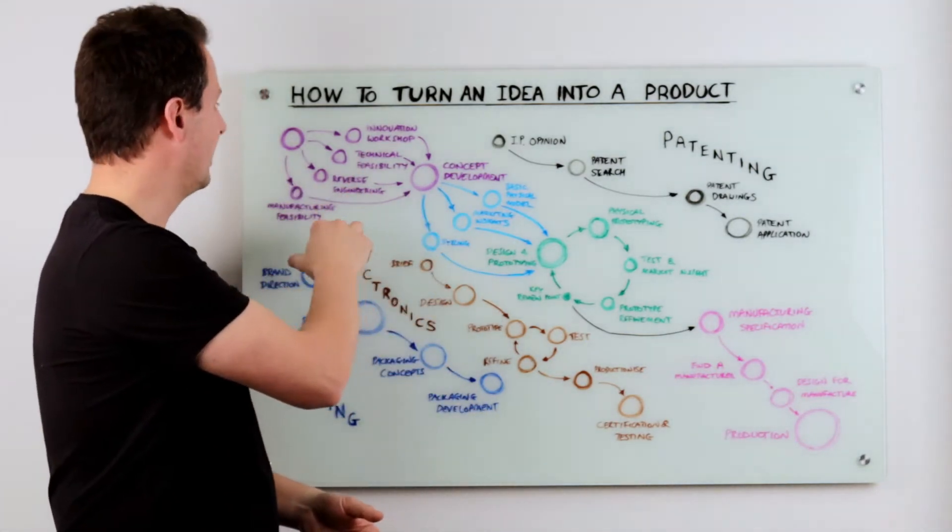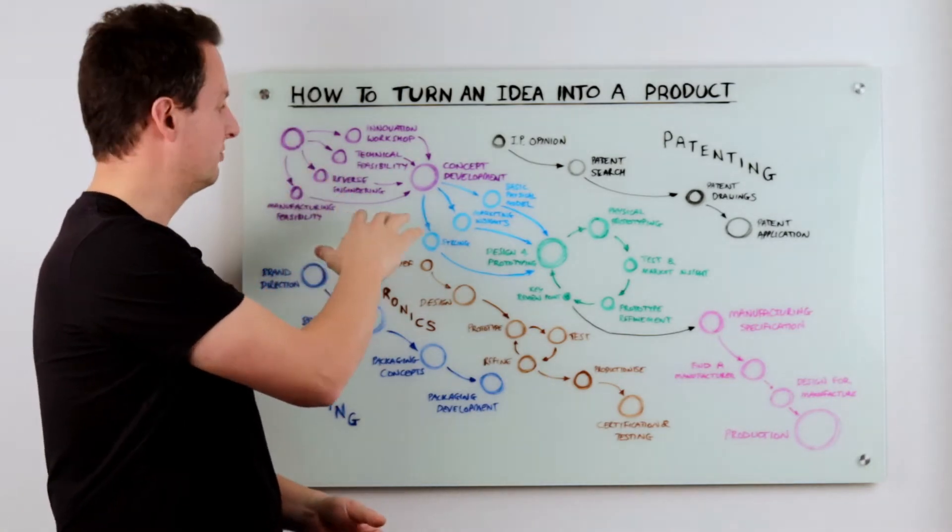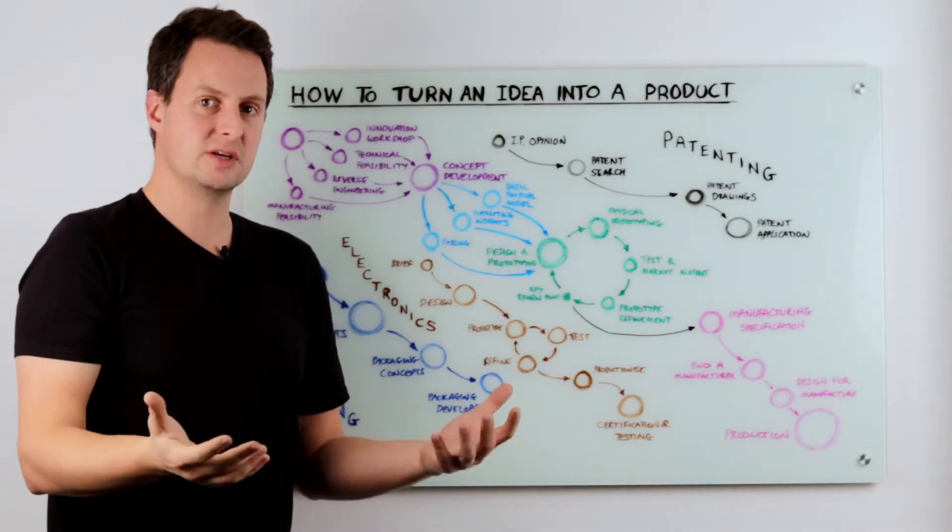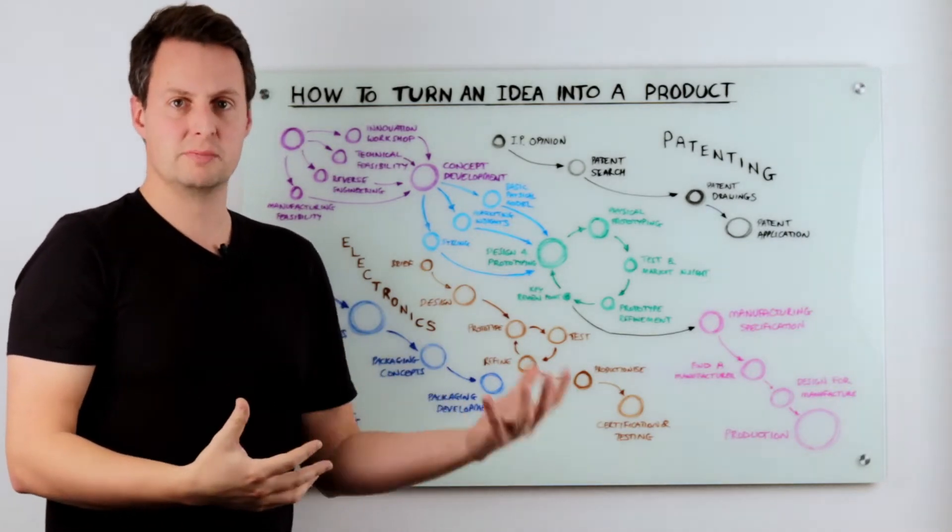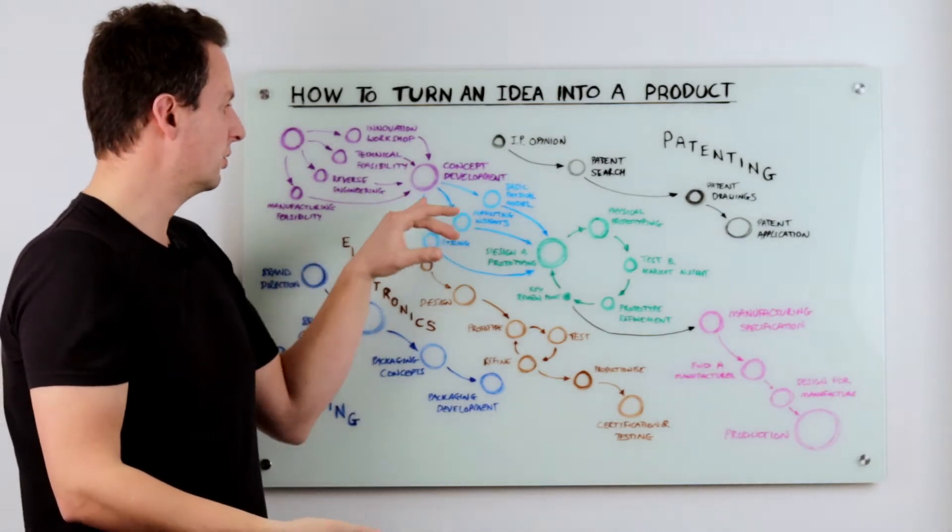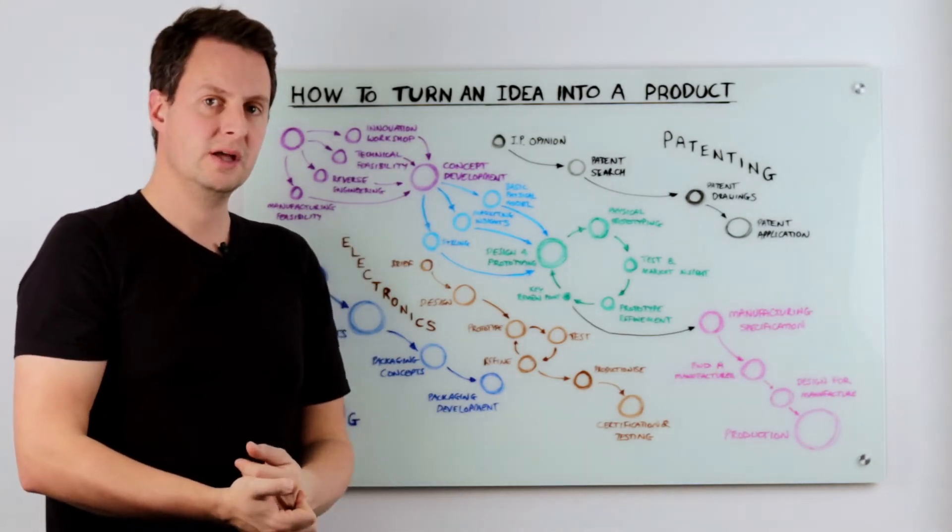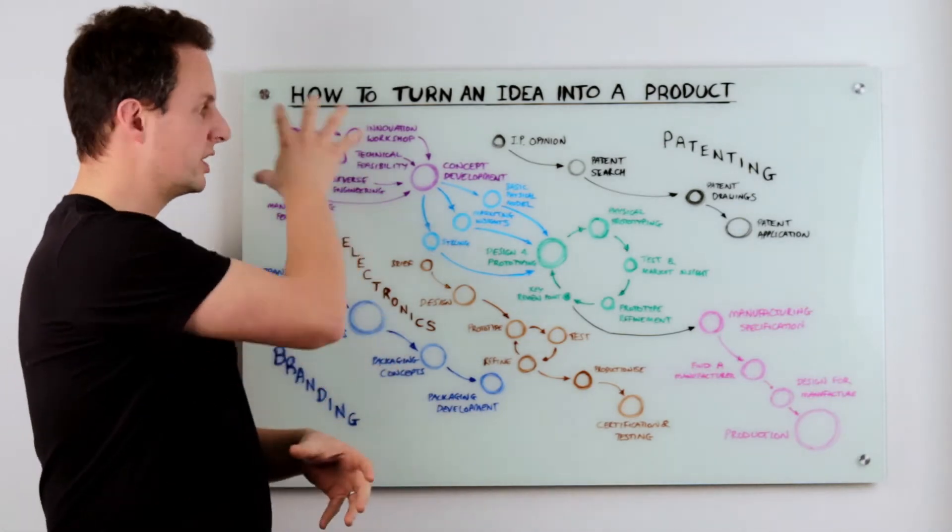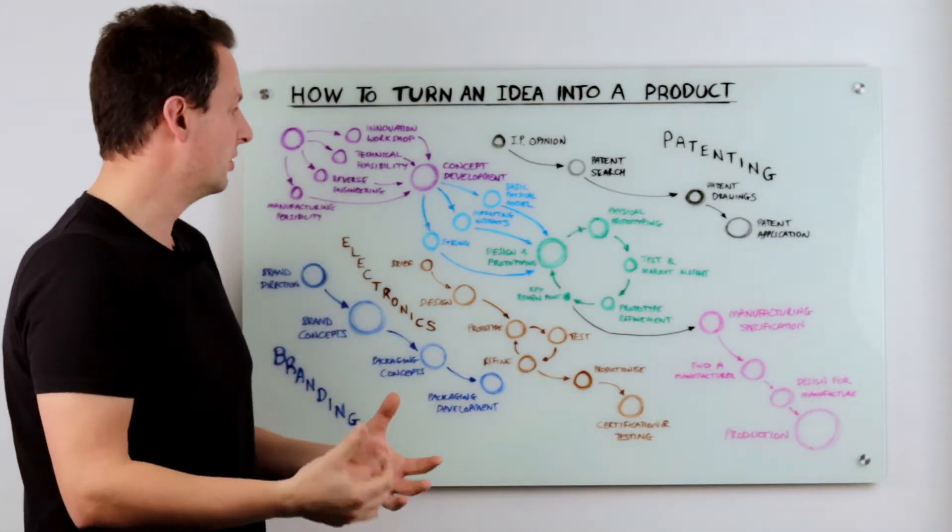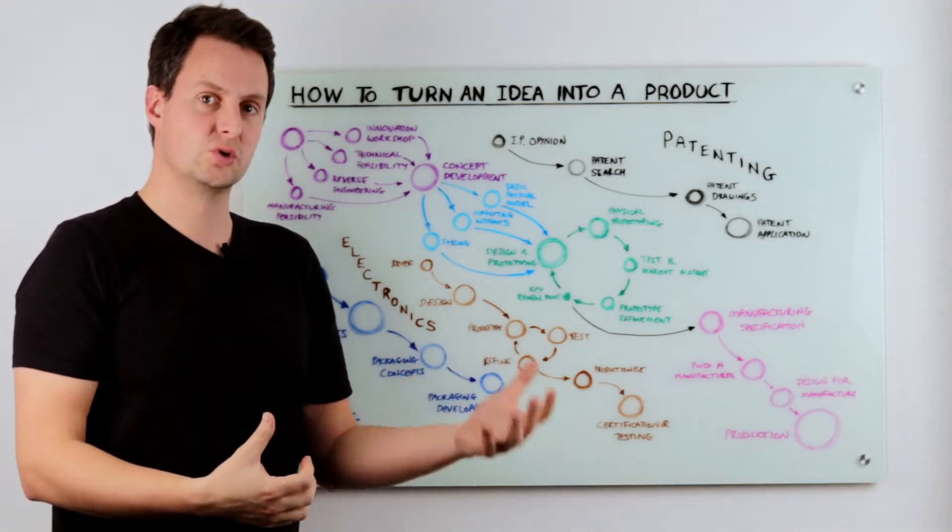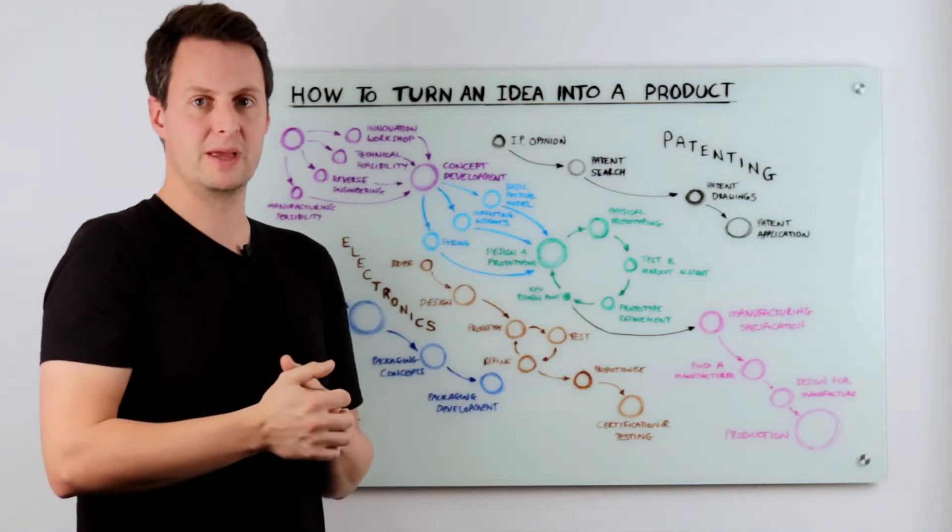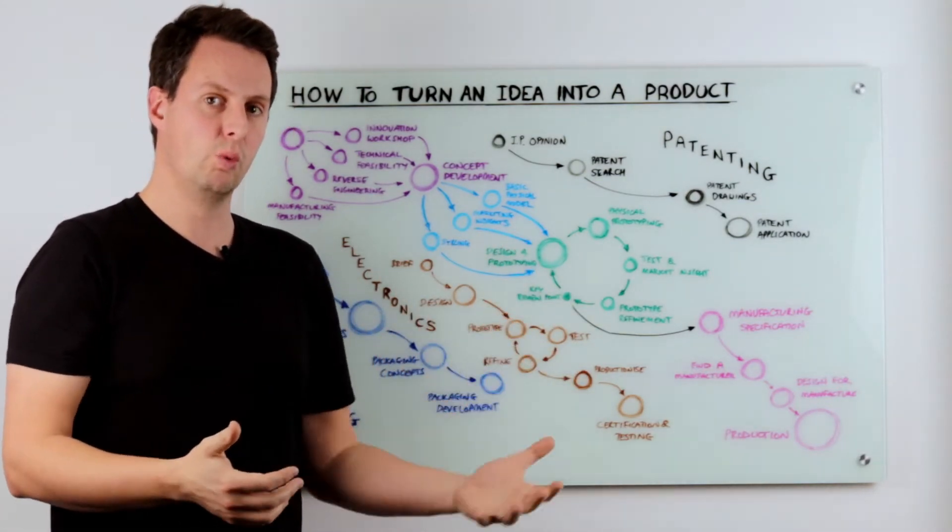So once you've done all of that and also developed a really good project brief, then that's the time to get some concept development done. It might be something you can do in-house, or you might need to employ an external product design agency to take all this information and turn it into the right kind of concept. I'm assuming, by the way, that you've already got market insight or you wouldn't be doing this process. But if you haven't, it's also worth trying to talk to a target market at that stage to get market insight through developing something that the people who are going to buy your product actually want.